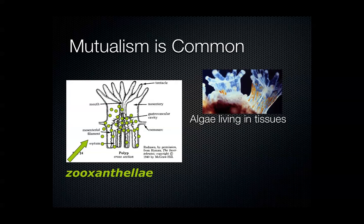Mutualism is a really common symbiosis type in this group. Coral actually has algae living in its tissues — it gives the coral its color, and the algae photosynthesize, just like in the upside-down jellyfish and the green hydra. The coral gets the photosynthetic products from the algae, the algae gets a safe protected place to live, and the coral relies on the algae so greatly that if it loses it, it will probably die relatively shortly after.